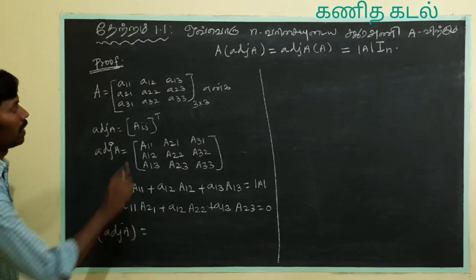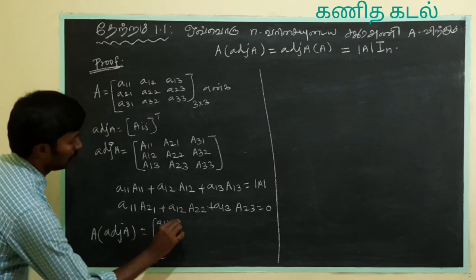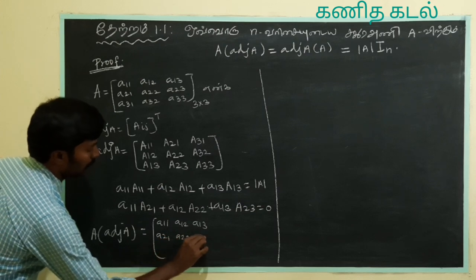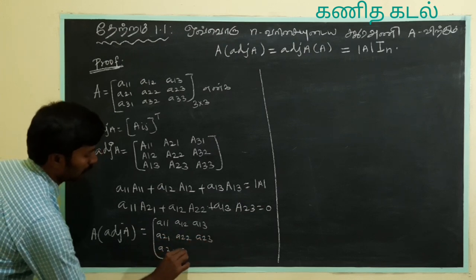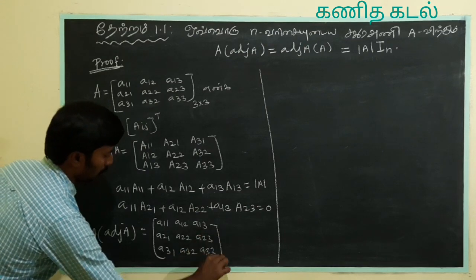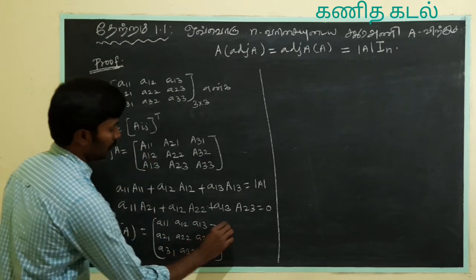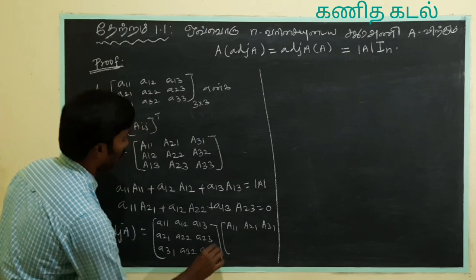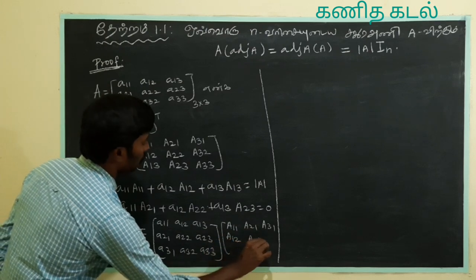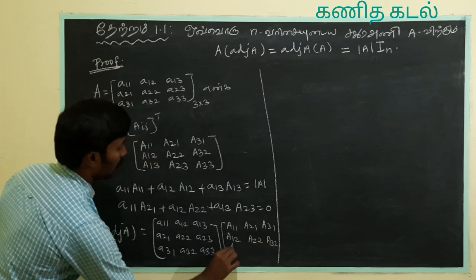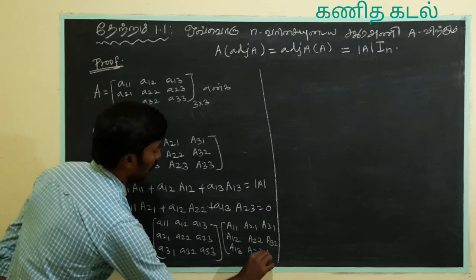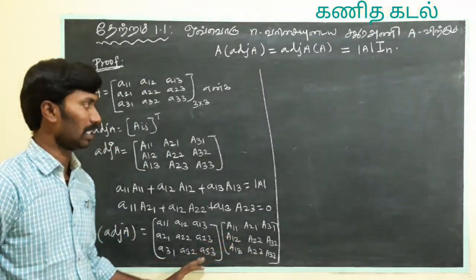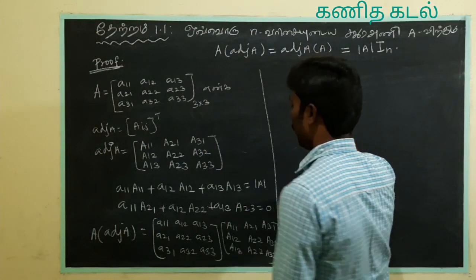So we have matrix A with elements A11, A12, A13, A21, A22, A23, A31, A32, A33. Into adjoint — which is: A11, A21, A31 in the first column; A12, A22, A32 in the second column; A13, A23, A33 in the third column. This is A into adjoint. Now we multiply.